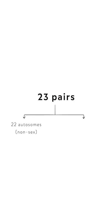22 of those pairs are autosomes — non-sex chromosomes — and one of those 23 pairs represents the sex chromosomes. We have two sex chromosomes: X and Y.